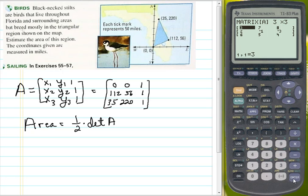So I want a 3 by 3 matrix, and my numbers again were 0, 0, 1 on the first row, 112, 56, and 1 on the second row, and 35, 220, and 1 on my third row.